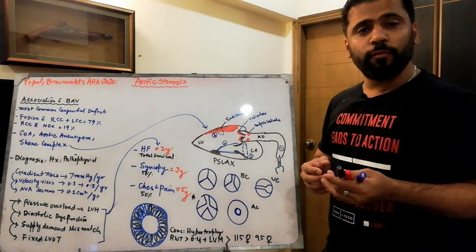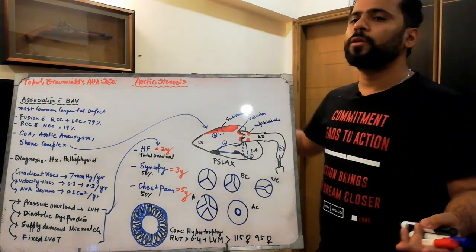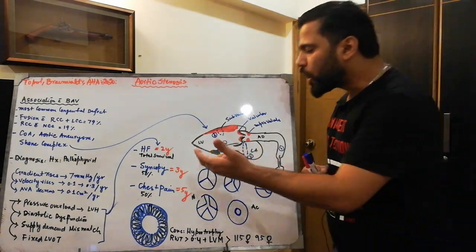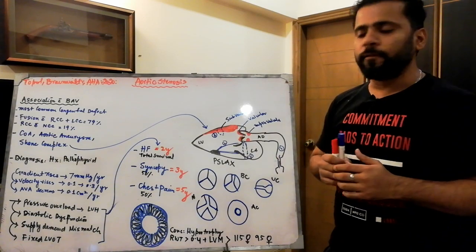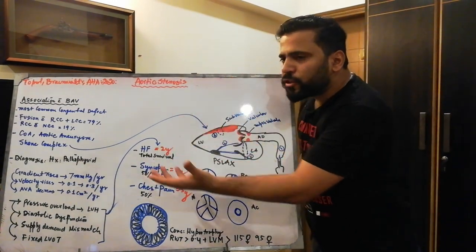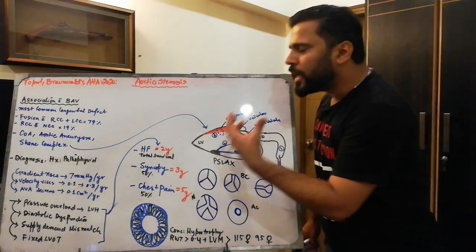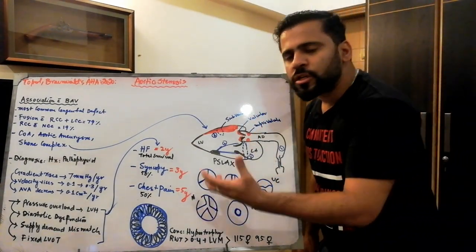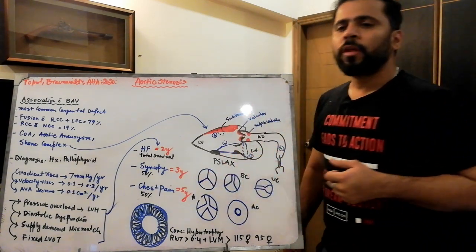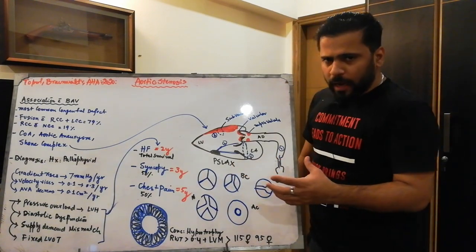Without wasting time, we move towards our topic — aortic stenosis, the very first topic of valvular heart diseases. As the name shows, aortic stenosis means there is something stenotic, something hampering the blood flow across the aortic valve or across the path of the aortic valve. We will cover pathophysiology, approach, investigation, natural history, clinical features, and the type of hypertrophy that occurs in aortic stenosis.